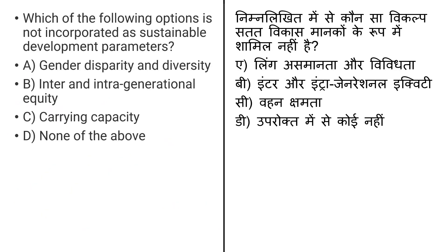Here is the last question: Which of the following options is not incorporated as a sustainable development parameter? The options are: gender disparity and diversity, inter- and intra-generational equity, carrying capacity, and none of the above. Please try to answer this question and write your answer in the comment box.